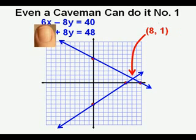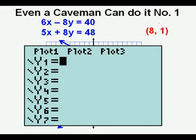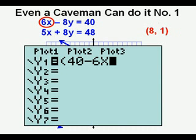Now we will check Og's solution with the graphing calculator. We first go to the y equals view. We start the first equation by opening with the parentheses and placing the 40. Now we get rid of the 6x on the left by subtracting 6x. Finally, we close the parentheses and divide by the coefficient of y, which is -8.